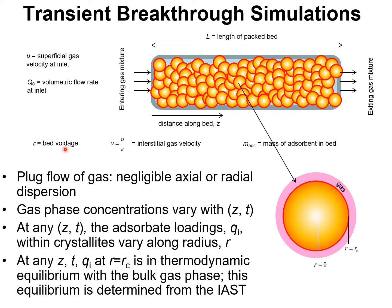The bed voidage is epsilon. The gaseous mixture enters at a superficial gas velocity of U. Q_0 is a volumetric flow rate at the inlet, say in units of liters per second. And the interstitial gas velocity inside the bed is the superficial gas velocity divided by the bed voidage which is V.